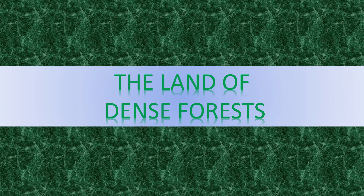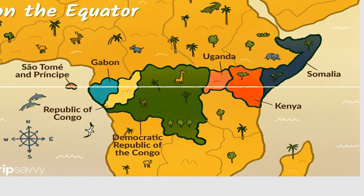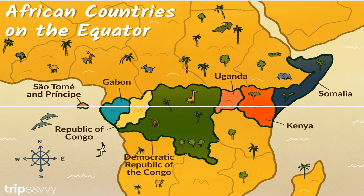It results in great biodiversity in the region. We will learn more about this region by considering the example of the Democratic Republic of Congo. Earlier it was named as Zaire.